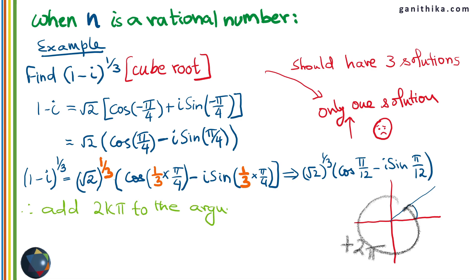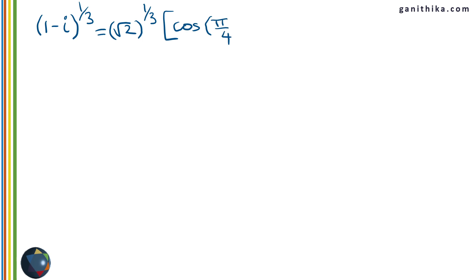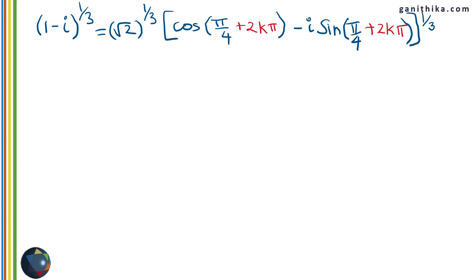To find all solutions, add 2kπ to the argument, where k = 0, 1, 2, …, n−1. For the cube root, we need k = 0, 1, 2, giving three solutions. So the expression becomes (√2)^(1/3) × [cos((π/4 + 2kπ)/3) + i sin((π/4 + 2kπ)/3)], and we substitute each value of k in turn.